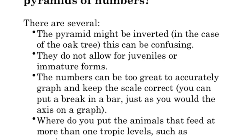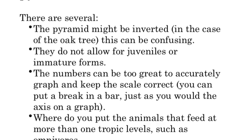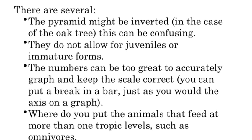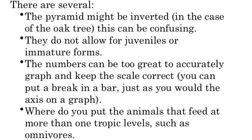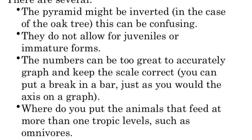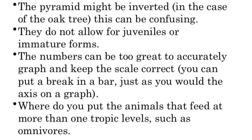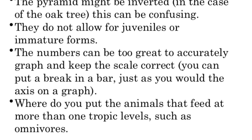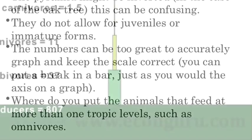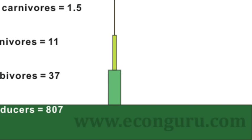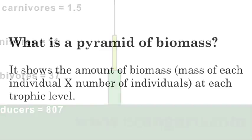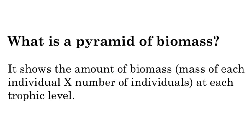I'd recommend pausing and writing some of this down. Disadvantages: that inverted pyramid confuses people, it doesn't allow for juvenile or immature forms, the numbers can be really big so it's hard to fit everything in — especially at the autotroph level, where we often put a break in the bar like on a graph. And where do you put omnivores? Omnivores could be at any level, which makes this tricky. You can see how big that producer square is compared to everything else.